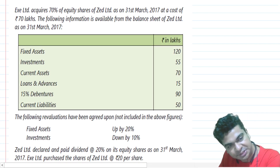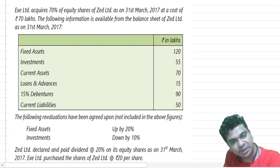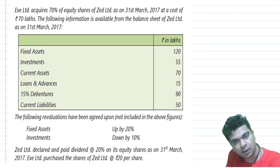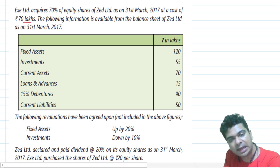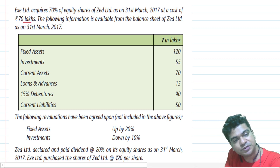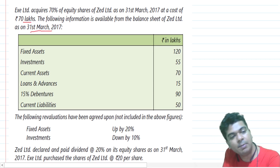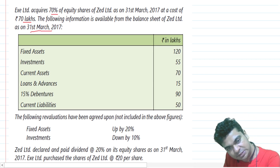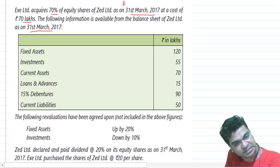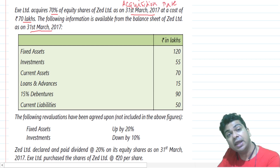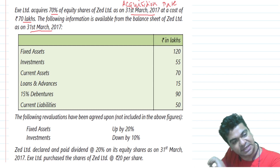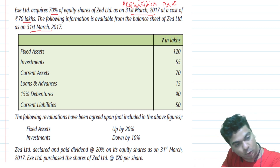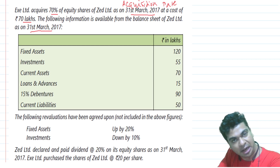X-Limited acquires 70% of equity shares of Z-Limited as on 31st March 2017 at a total cost of ₹70 lakhs. The following information is available from the balance sheet of Z-Limited on 31st March 2017. Since we are buying 70% shares on 31st March 2017, that date is our acquisition date. Information is given on that date: fixed assets, investments, current assets, loans and advances, 15% debentures, and current liabilities.